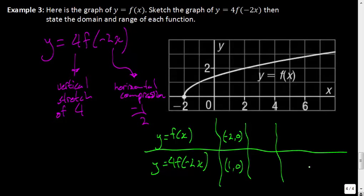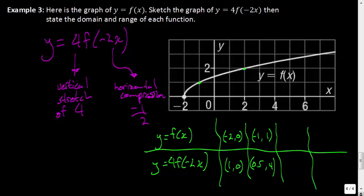Another nice ordered pair is (−1, 1). The x-coordinate multiplied by negative ½ gives us positive 0.5. The y-value is stretched by 4, so 1 × 4 = 4. That gives us (0.5, 4). Another ordered pair we have is (2, 2). The x-coordinate is compressed by negative ½, giving us negative 1. Then we take 2 and stretch by 4 to give us 8.